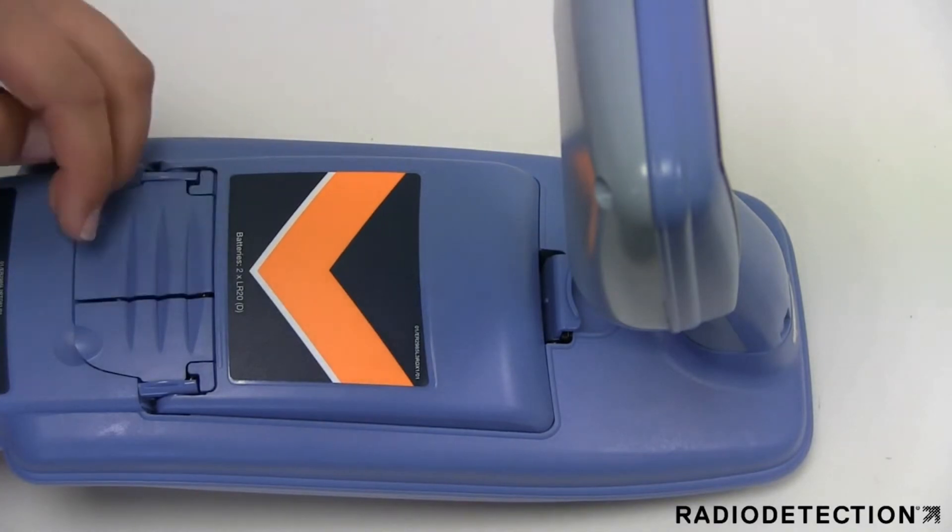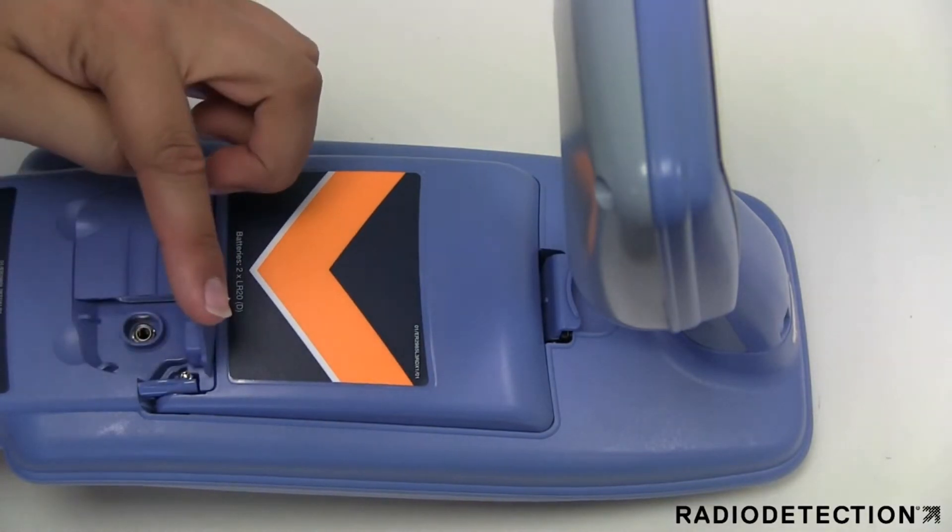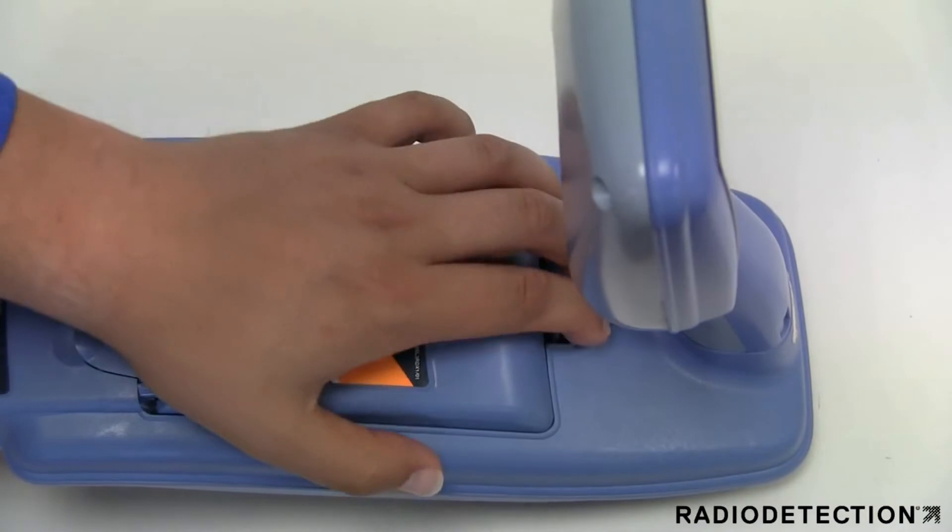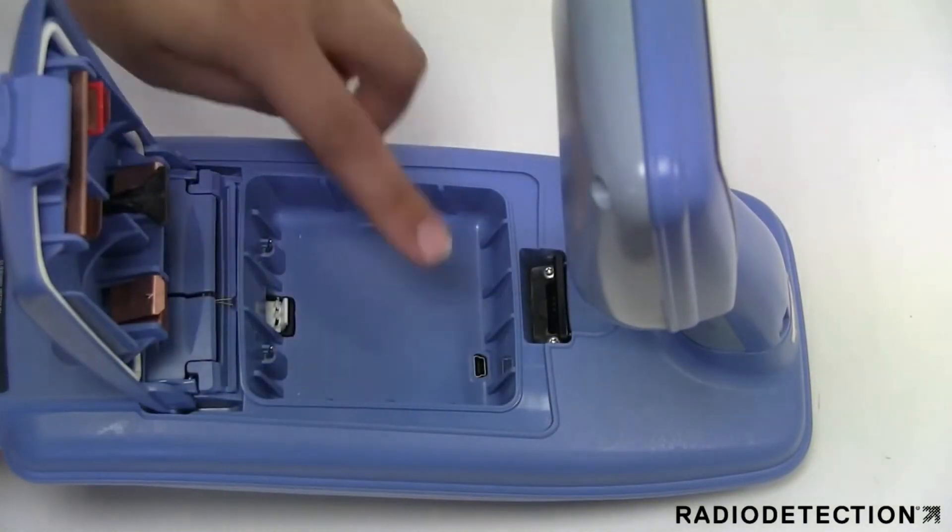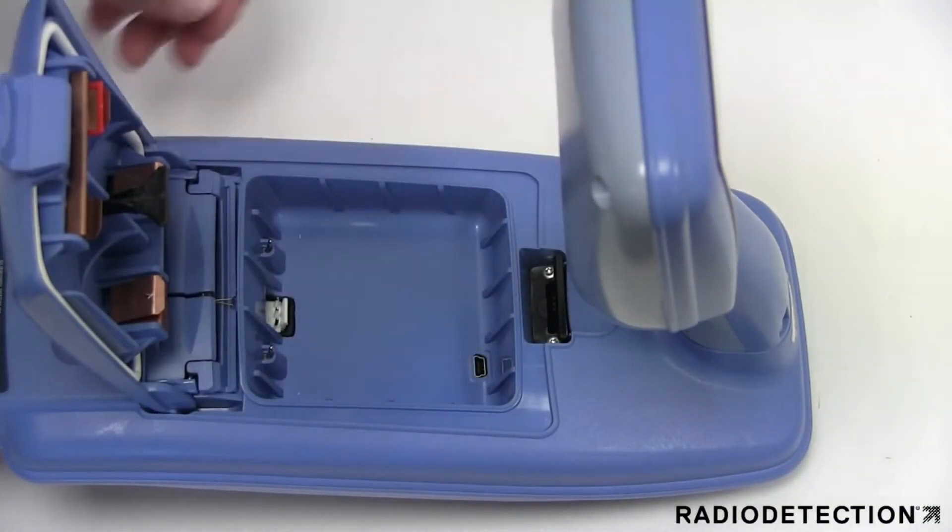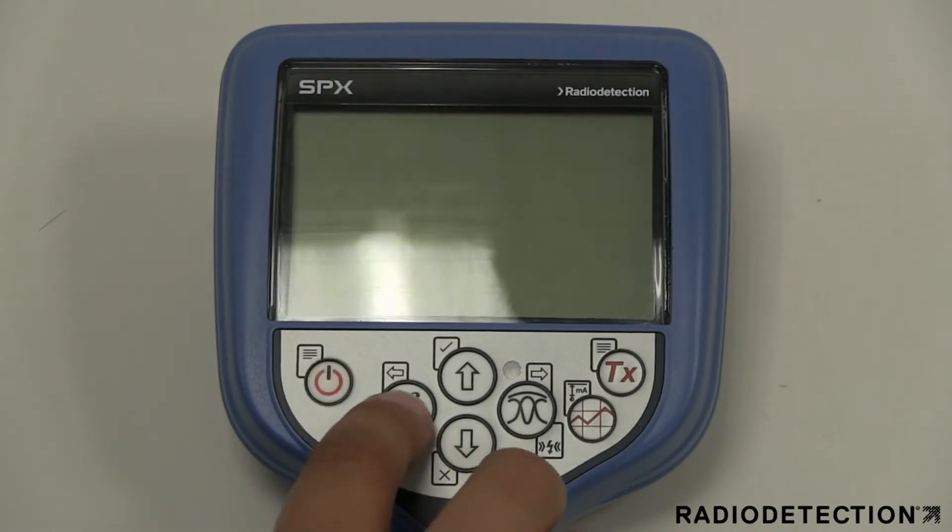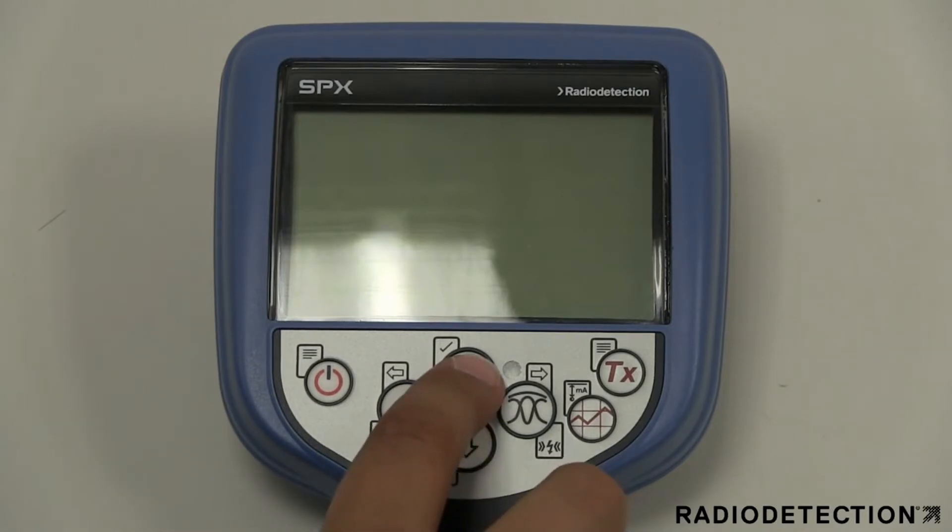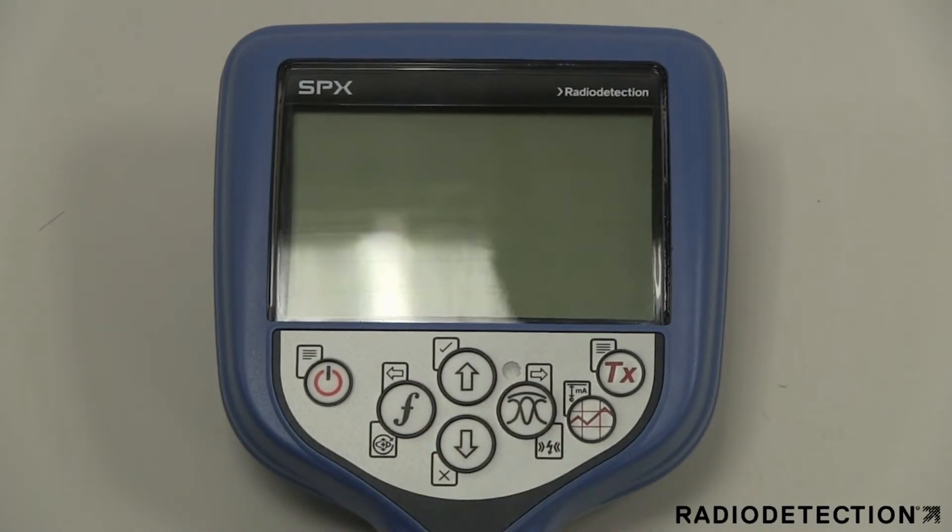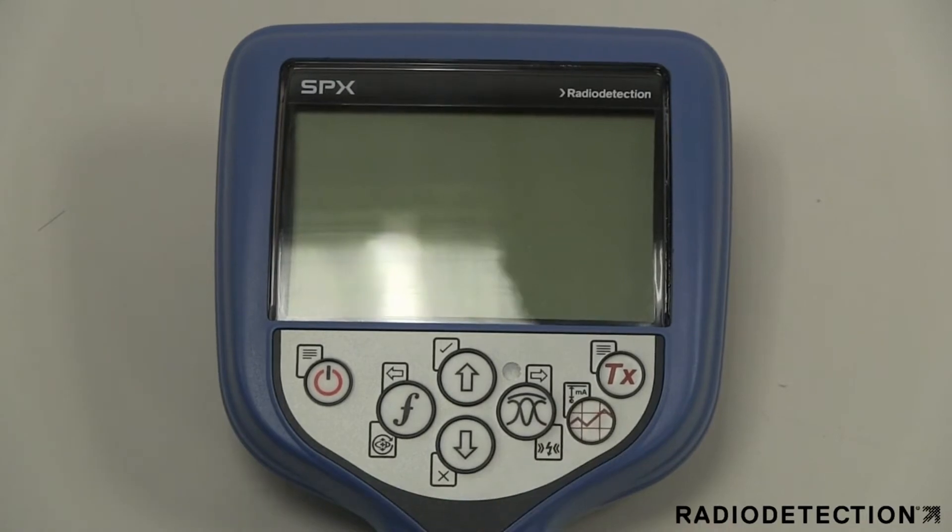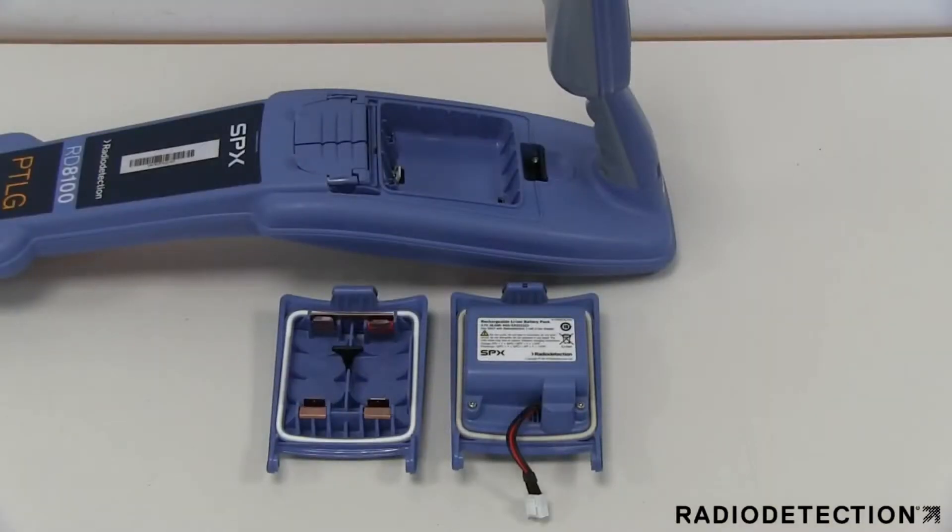The precision locator features an accessory socket, headphone socket, battery compartment, USB connector, LCD screen with auto backlight, and keypad. The keypad has a power key, a frequency key, up and down arrow keys, antenna key, survey key, and the transmitter key.